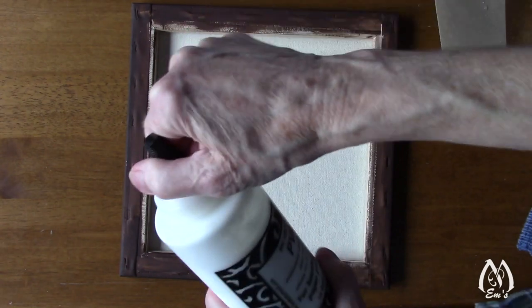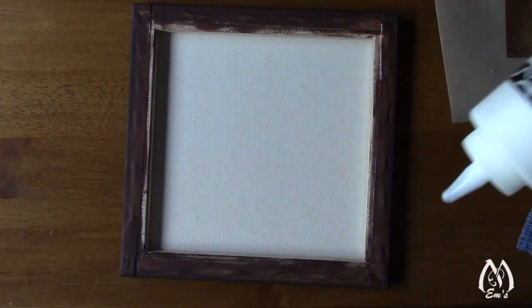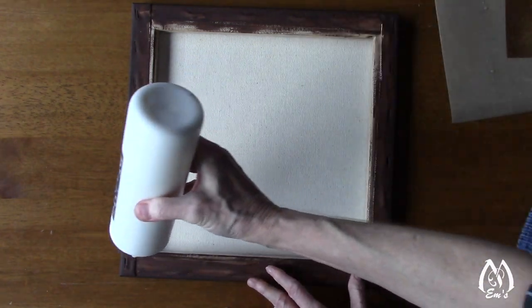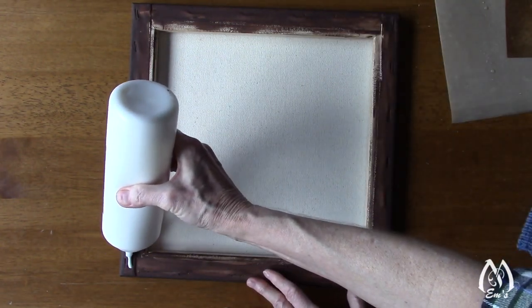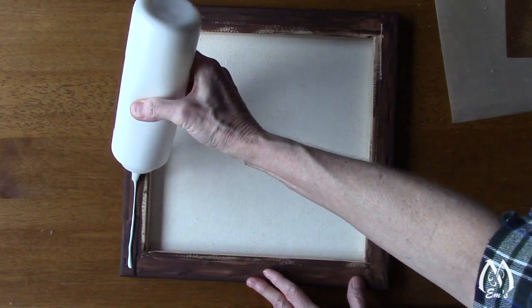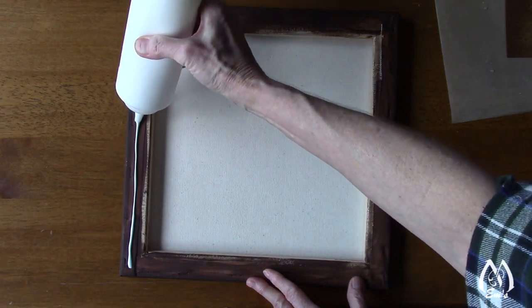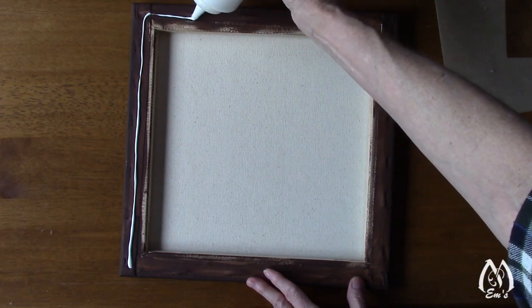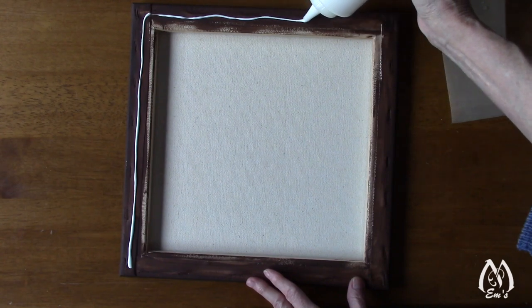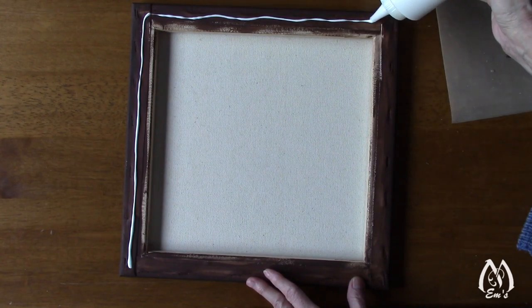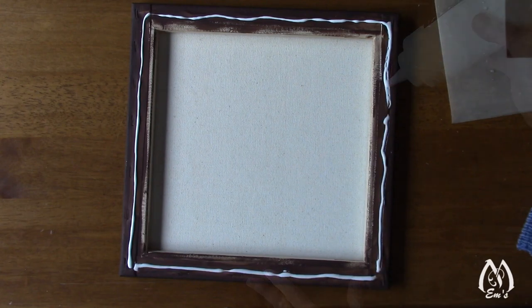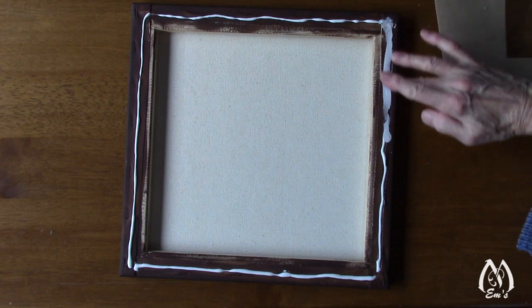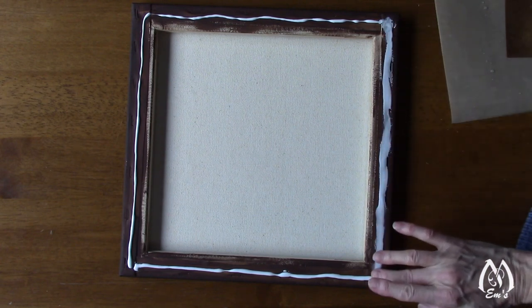Now I'm going to take this book binding glue and I'm going to run a bead about a quarter inch where I think that the edge of this is going to be. If there's a little bit too much, it's going to seep out, but that's okay because we'll wipe it up.